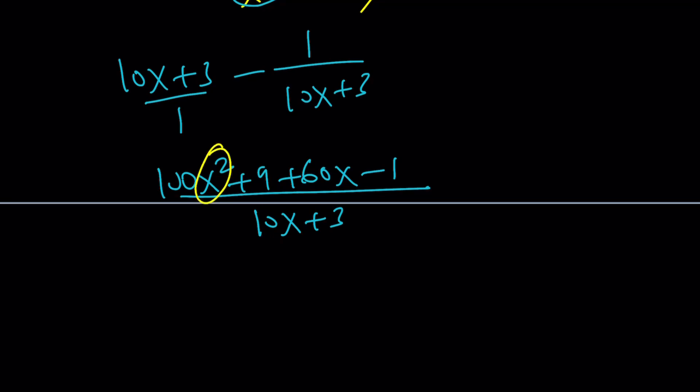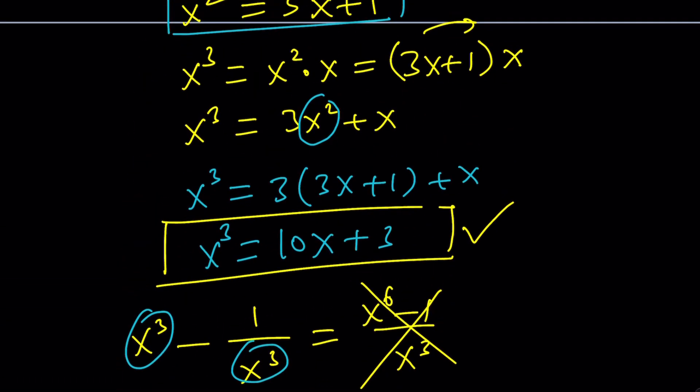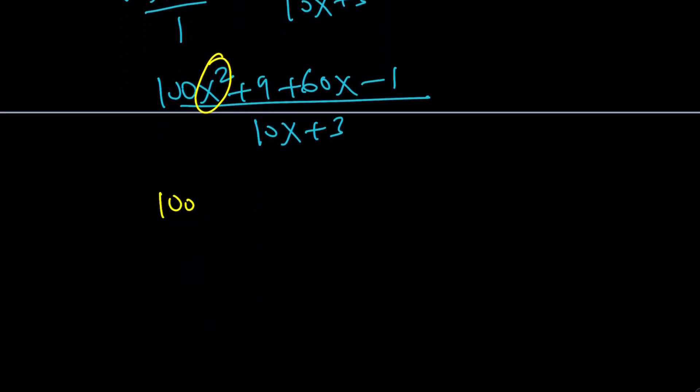You get 100x squared plus 9 plus 60x minus 1 divided by 10x plus 3. Now, notice that x squared can be replaced with something, which was what? x squared was 3x plus 1. Be careful. 3x plus 1 is going to replace that. And then we have another 60x. And then 9 minus 1 is just 8. And divide that by 10x plus 3.